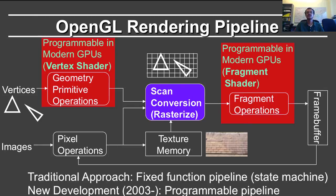You generate fragments — that's where the geometry intersects each pixel. It's called a fragment rather than a pixel because multiple geometric objects could intersect the pixel. You might have multiple fragments for a pixel because of things like anti-aliasing. Those fragments are processed by the fragment shader.